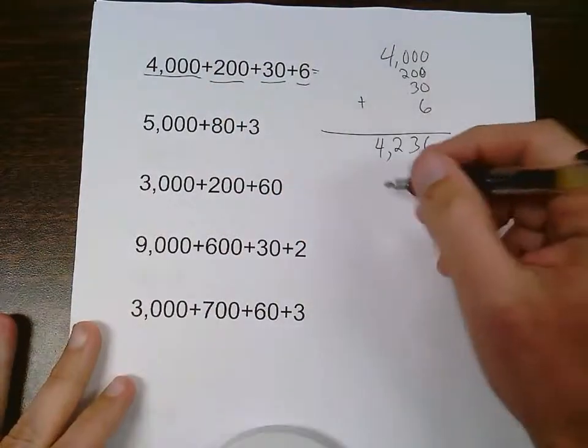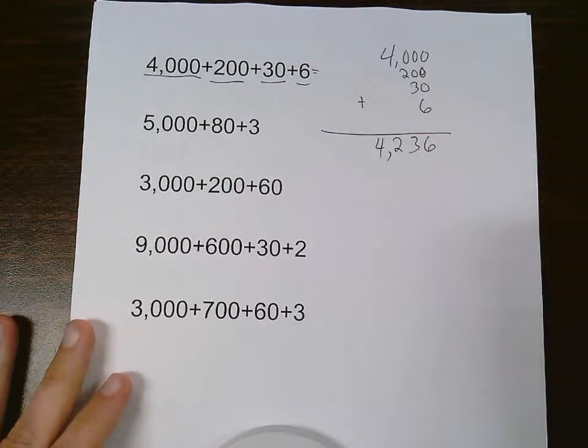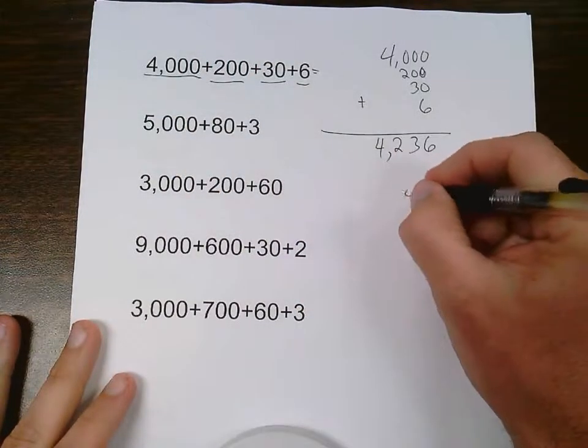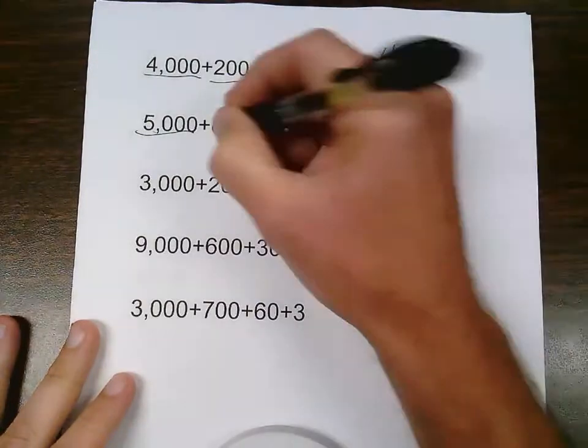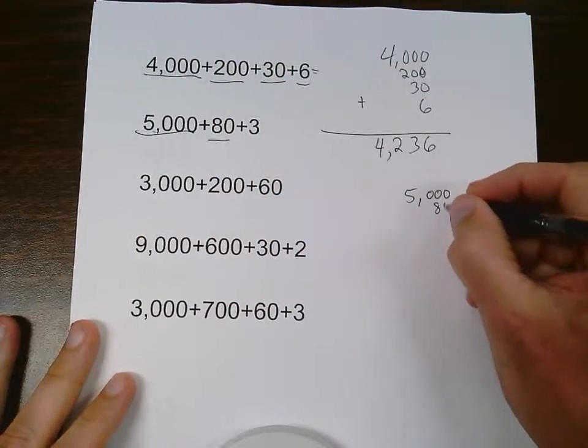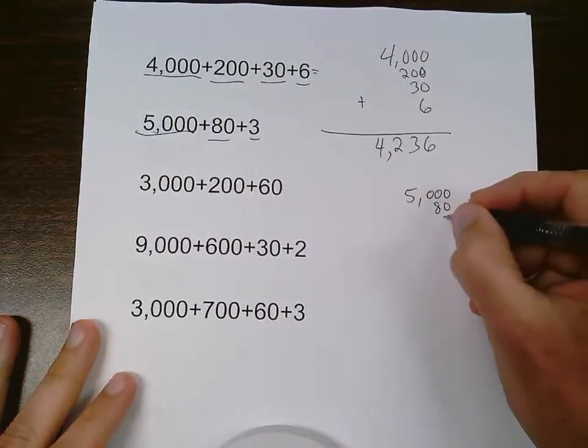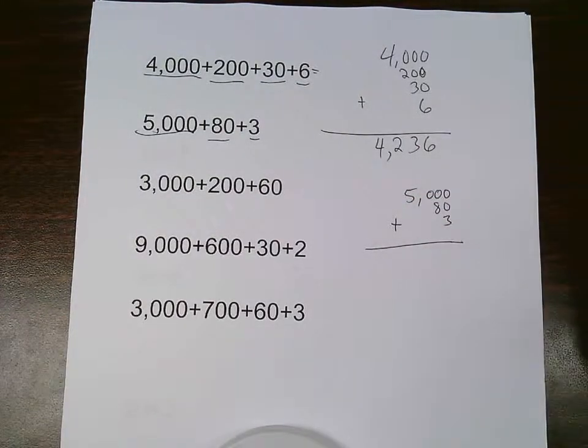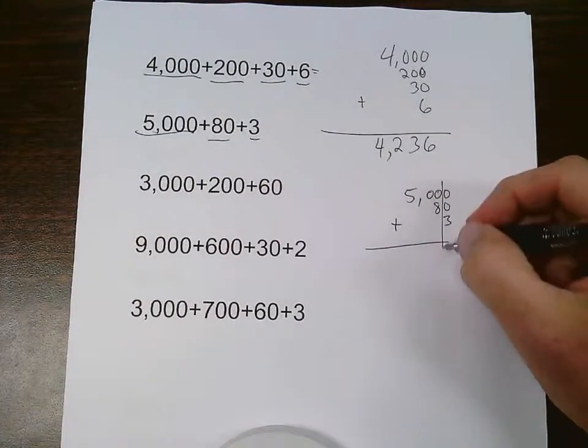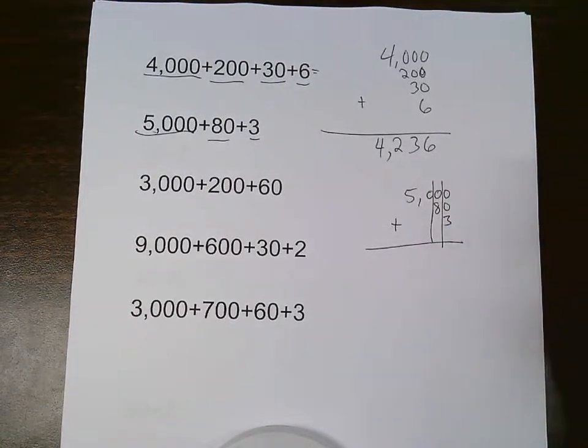Next one. I'm going to work a little bit down farther here. Start off with my 5,000. Then I put my 80 down. And my 3 down. Once again, the most important thing is lining those place values up. Ones with ones, tens with tens.